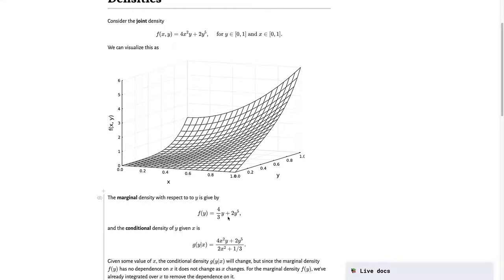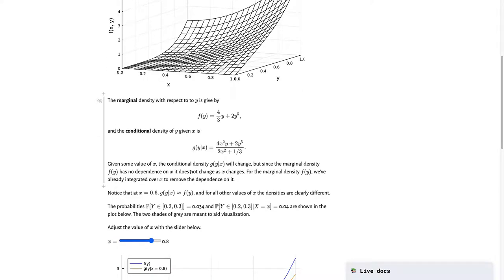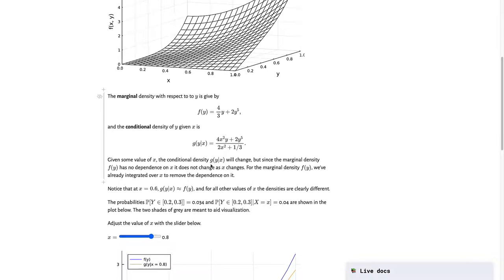As practice of the marginal density, you could try yourself to calculate f of y here. And as practice for the conditional density, you should try to calculate for yourself g of y given x. Remember, it's just the arguments that for the most part define what this conditional density is. So this is a conditional density of y, the function is of the variable y, given x is equal to some value.